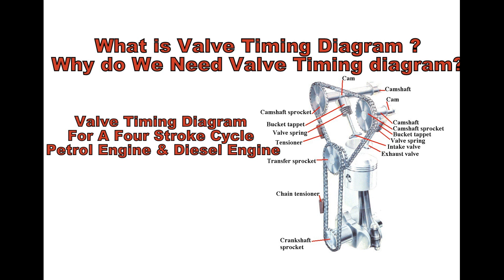The valve timing diagram comprises a 360-degree figure which represents the movement of the piston from TDC to BDC in all the strokes of the engine cycle, measured in degrees. The opening and closing of the valves is controlled according to these degrees. Why do we need a valve timing diagram?